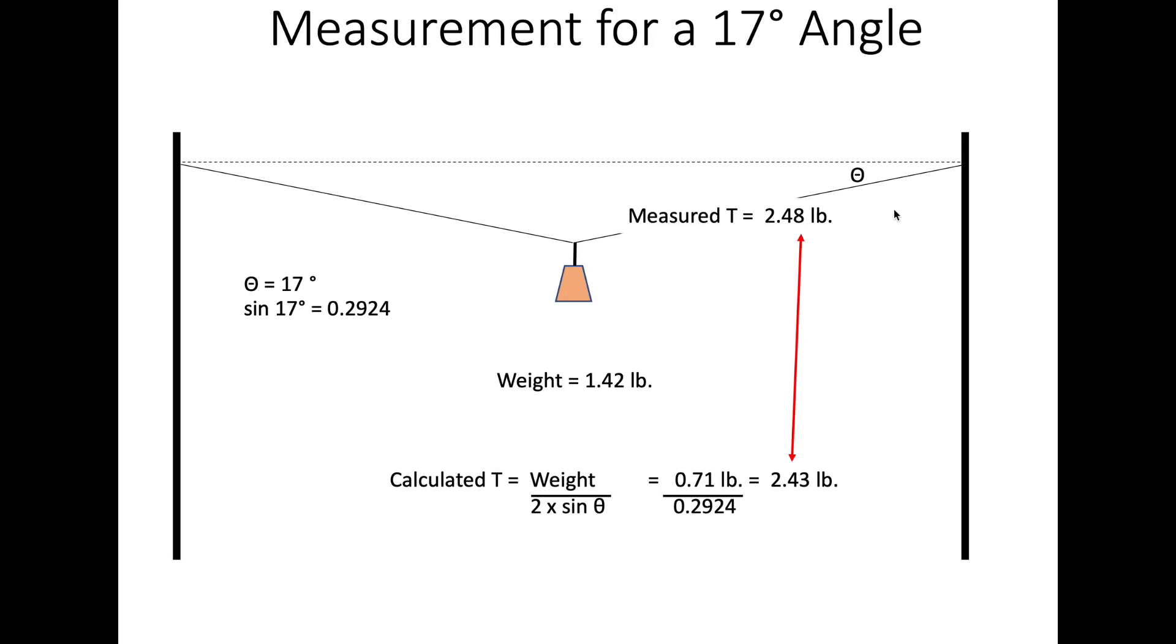Okay, this was for our 17 degree angle. That's this angle here. We measured 2.48 pounds. Our weight hanging on it was 1.42 pounds, positioned in the center. The sine of that 17 degrees is equal to 0.29. And we divide that into half of that weight, and we end up with 2.43. Pretty close to 2.48. With inherent errors in our measurements, I'd say that's pretty close, so we'll live with that.